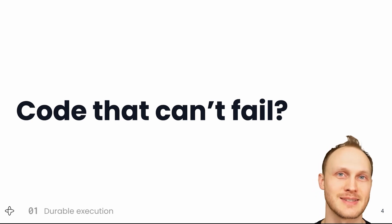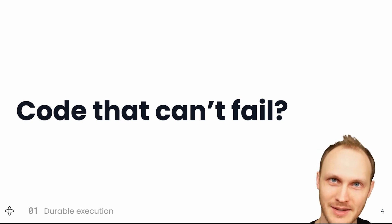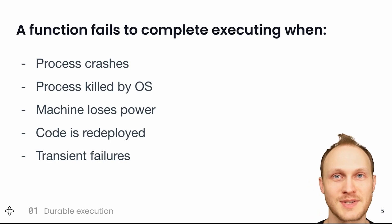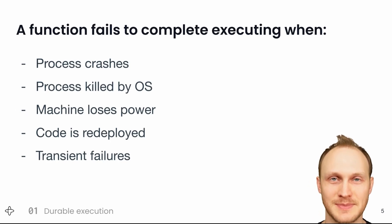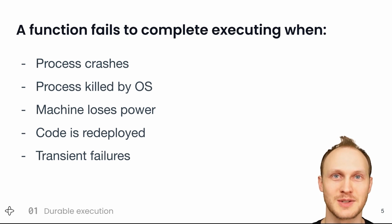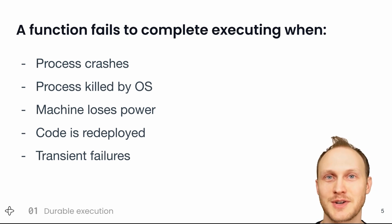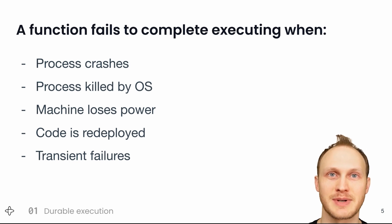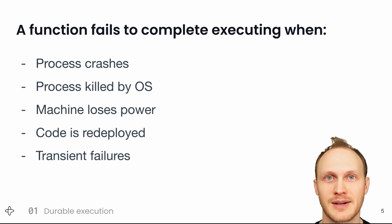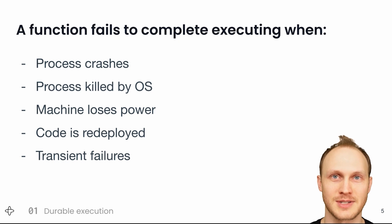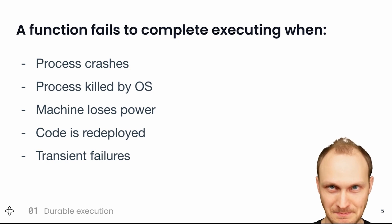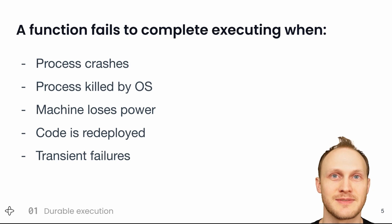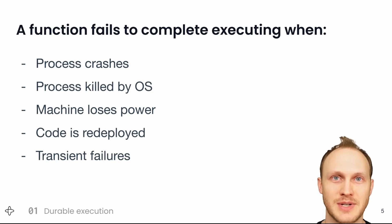But there are a number of different cases in which your code might fail to complete. The process could crash — maybe you divide by zero. The process could be killed by the OS, maybe it's out of memory. The machine could lose power. You could deploy a new version of your code, and while usually you'd set up a graceful shutdown for the old processes, they may be doing something longer than the grace period, like a sleep statement for one hour, and that would get interrupted by the forced shutdown after, say, a five minute grace period. The final reason is transient failures, like temporarily unable to reach a downstream service.